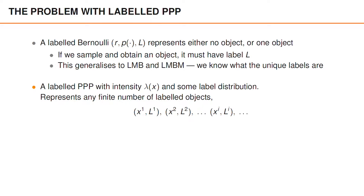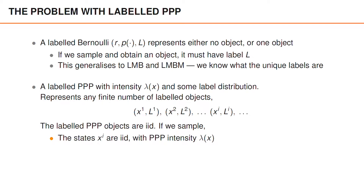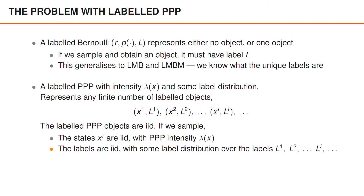Now, consider instead a labeled Poisson point process with intensity lambda for the state X and some label distribution. This represents any finite non-negative number of labeled objects that can be indexed 1, 2, and so on. A property of the Poisson point process is that the objects are independent and identically distributed. So if we were to sample a labeled Poisson point process, then the states XI are independent and identically distributed with Poisson point process intensity lambda.